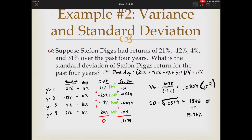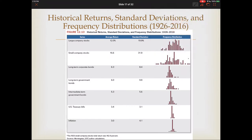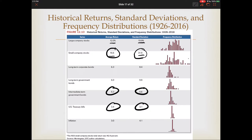Variance is notated as sigma squared and standard deviation is notated as sigma. As these values become higher, that means more volatility and more risk, and you should expect a higher return based on the risk-return trade-off. Looking at the historical returns, standard deviations, and frequency distributions from 1926 to 2016, the risk-return trade-off is confirmed: as standard deviation — our measure of risk — increases, so do the returns. Securities with less volatility have smaller returns.